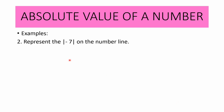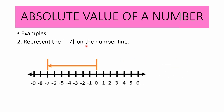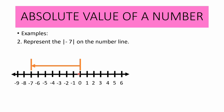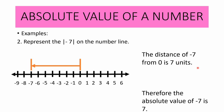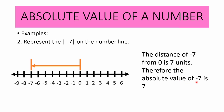Represent the absolute value of negative 7 on the number line. Let us study this figure. From zero, counting the distance to negative 7, regardless of the direction, the distance of negative 7 from zero is 7 units. Therefore, the absolute value of negative 7 is 7. Thus, in symbol, the absolute value of negative 7 is equal to 7.